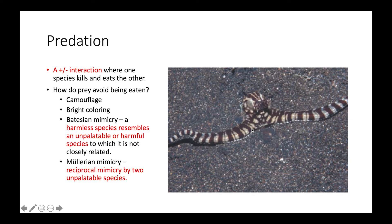Another kind of mimicry is Müllerian mimicry, which is reciprocal mimicry by two unpalatable species. For example, two butterflies that both taste bitter or unpleasant might mimic one another's wing coloration, even though both of them are already unpalatable.